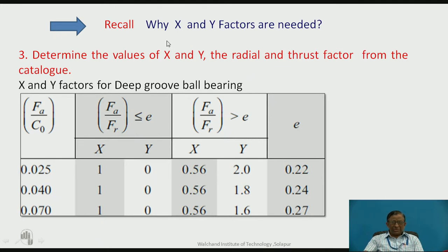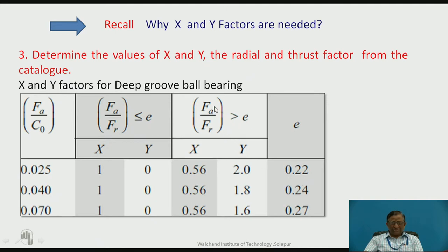Recall why we use X and Y factors in design and selection of bearings. The values X and Y are determined from the catalogue — the manufacturer provides X and Y values according to the particular type of bearing. For example, for a deep groove ball bearing, the standard chart of X and Y factors uses E value, which is FA by FR. The actual value of FA/FR is compared against the reference E value of 0.22, and accordingly X and Y factors are selected from the chart.